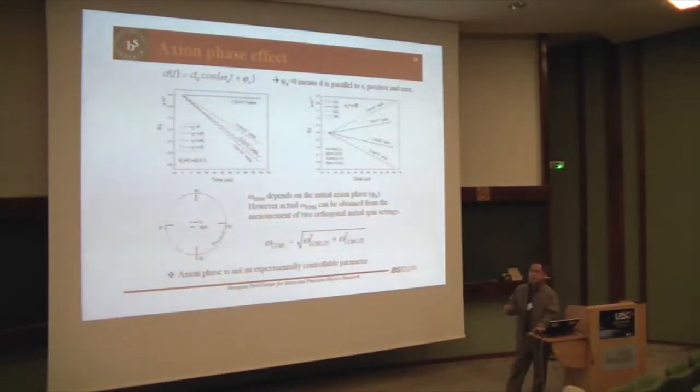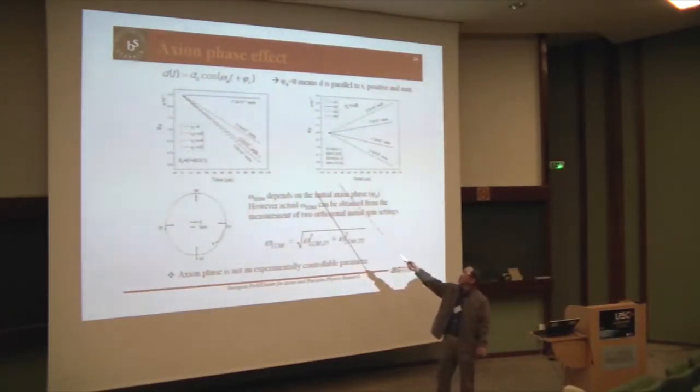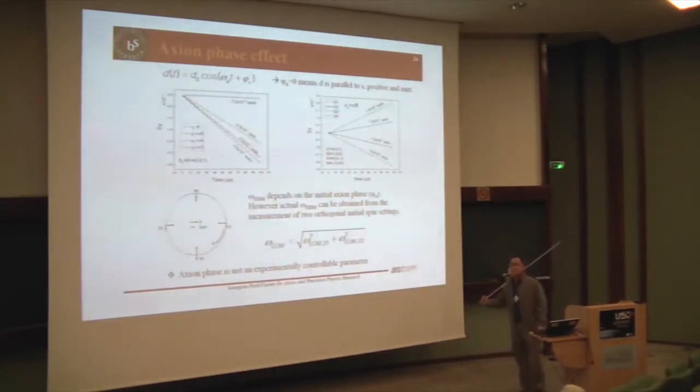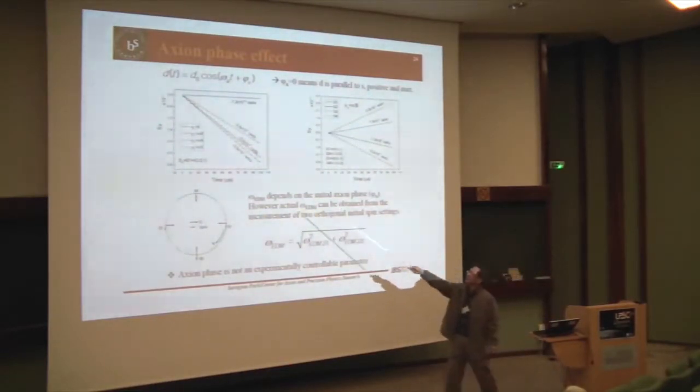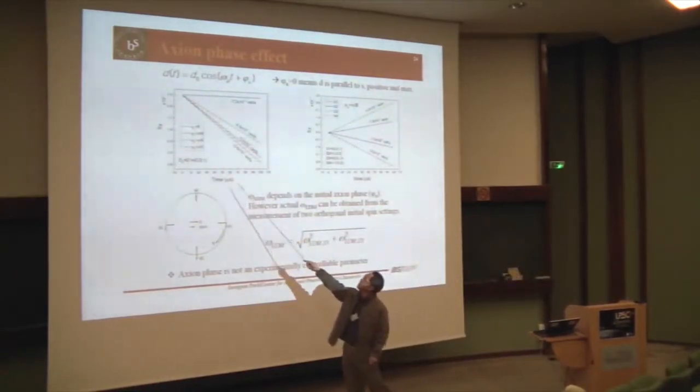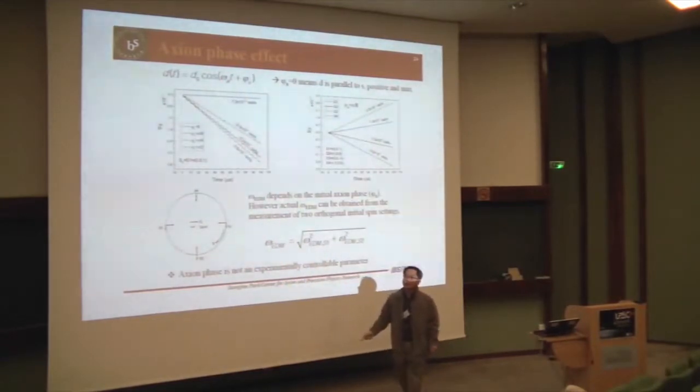There remains one more question. As you can see, in this plot, we don't know, nobody knows, the phase. But, that is not the parameters that you can control, in the experiment. But, nobody knows. But, it affects spin precession rate, as you can see here. Depending on the axion phase, you have different results. This is a problem, when you measure axion. If you are lucky, then you could have this phase. If you are unlucky, and you have that flat result.